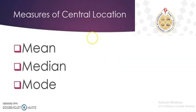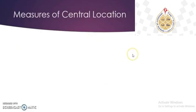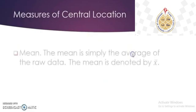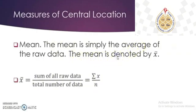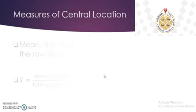The first measure of central location is the mean. The mean is simply the average of the raw data. The mean is denoted by x-bar. To compute the mean, it is the sum of all raw data divided by the total number of data.